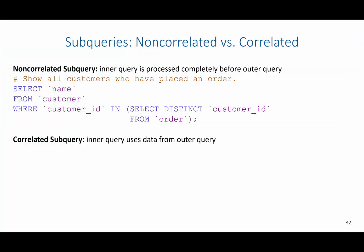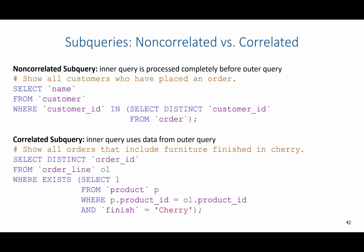A correlated subquery is an inner query that uses data from an outer query, meaning I cannot run the inner query without the existence of the outer query at the same time. For example, if I wanted to show all orders that include furniture finished in Cherry, I'm going to select the distinct order ID from order line with an alias of ol, and then look where EXISTS. EXISTS means if a row is returned, we'll return an order ID. If a row is not returned that matches some condition, then we won't return that order ID.